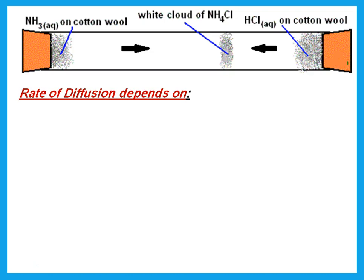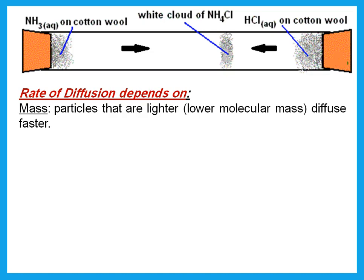The rate of diffusion depends on the mass of the particle. NH3 has a molecular mass of 17 (N = 14, plus three hydrogens each with mass 1). HCl has a molecular mass of 36.5 (H = 1, Cl = 35.5). Because the ammonia particles are much lighter — lower molecular mass — they diffuse faster. This is why the particles meet nearer to the HCl: the ammonia particles move faster due to their lower molecular mass.